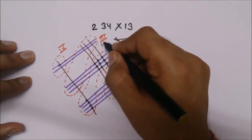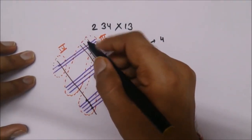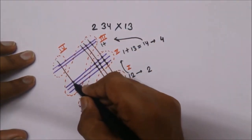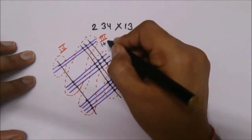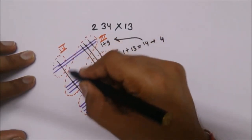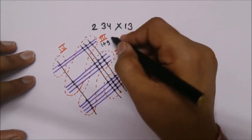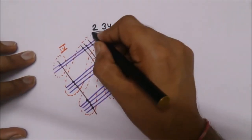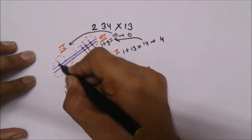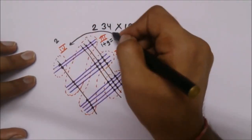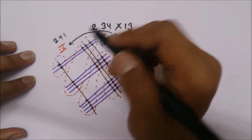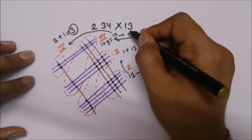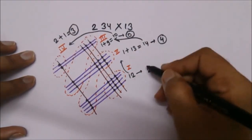One is added in the third region. Here we have a total of nine points, plus the carry of 1 gives ten. So we write 0 and carry 1 to the last region. In the fourth region we have two dots, plus the carry of 1 gives three. So we write 3.